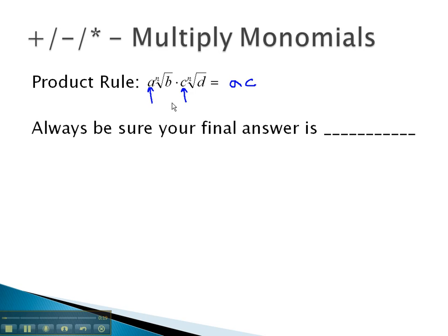And then we will also multiply those numbers inside, or the radicands, together under the same index, keeping them under the index. Of course, we always want to be sure our final answer is reduced. Let's take a look at some examples where we multiply the outside numbers and the inside numbers, and then make sure our final answers are reduced.